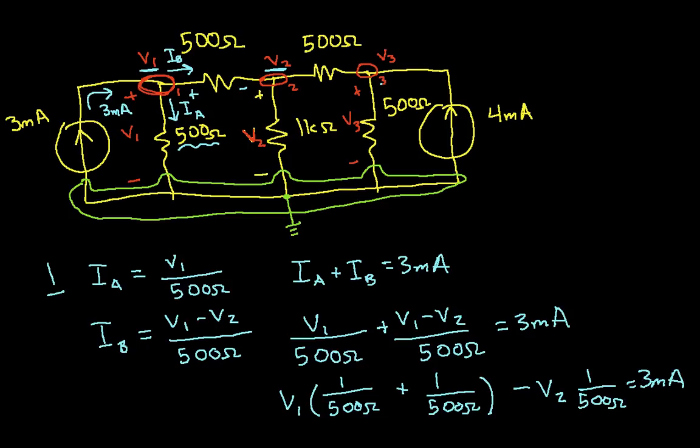I got it by applying Kirchhoff's current law at node 1, and I found the currents in terms of the node voltages. So this is the analysis at node 1.